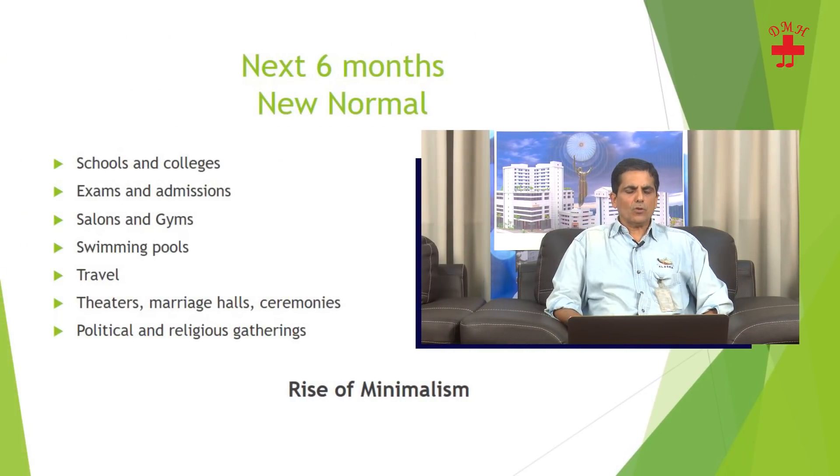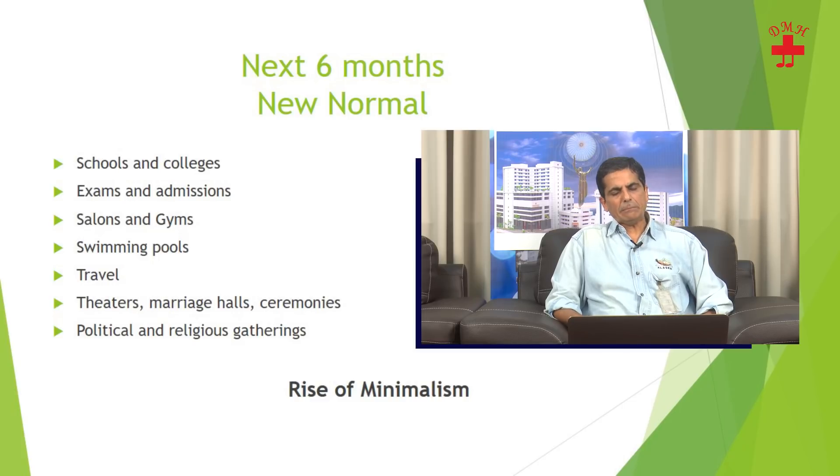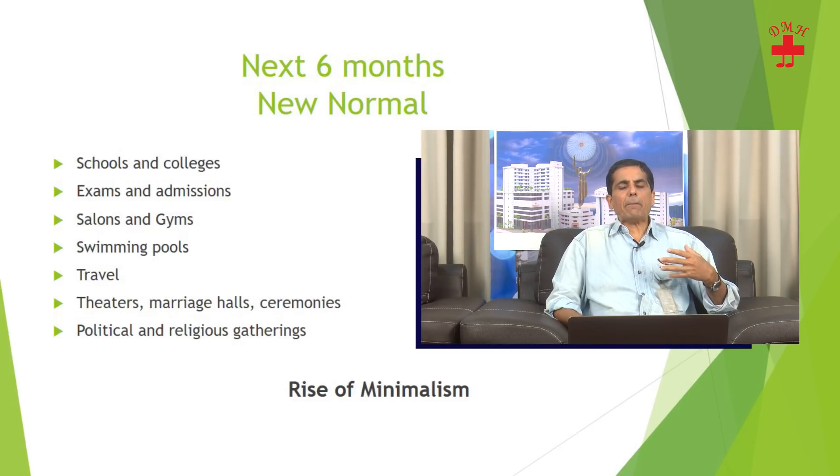What is the new normal for the next six months? Schools and colleges will most likely not open, because children cannot reliably be disciplined to use masks and maintain distancing. When schools open, COVID will spread rapidly — and who is at risk is not the children, but their parents and grandparents at home. France and Israel started schools and had to shut them down again. Exams and admissions will likely be virtual or electronic. Saloons and gyms are unlikely to start, or must start with great care.